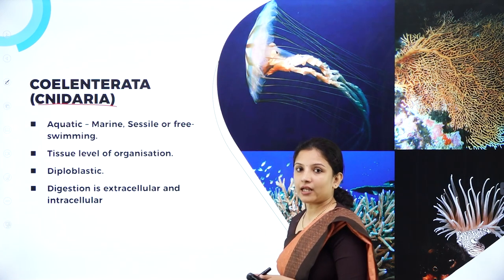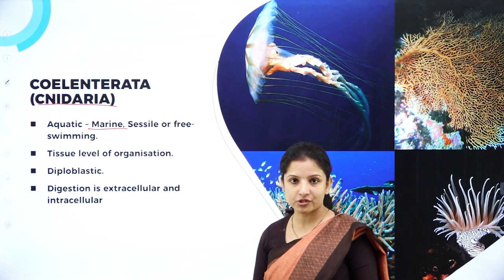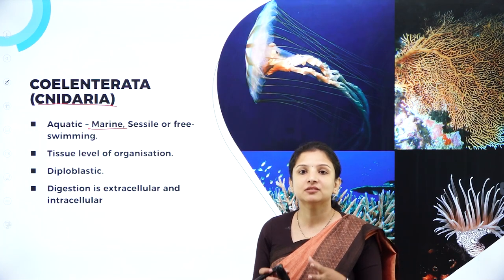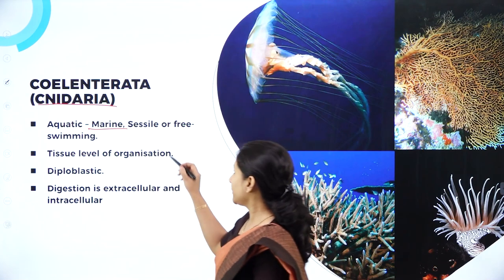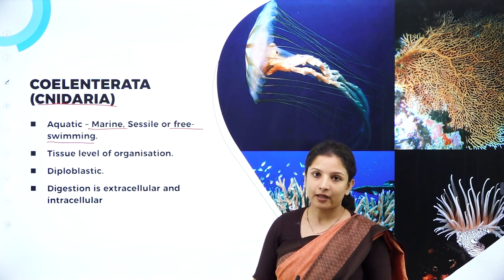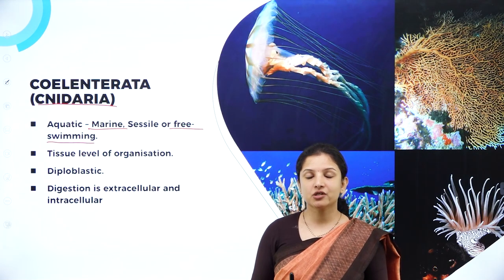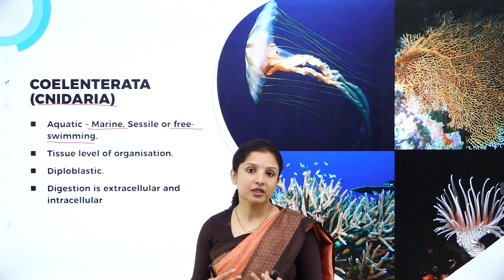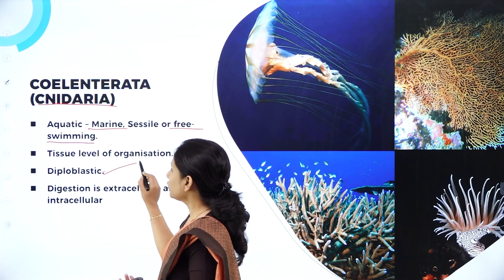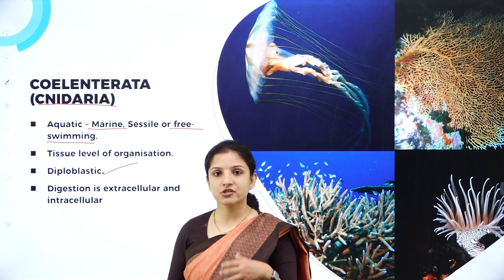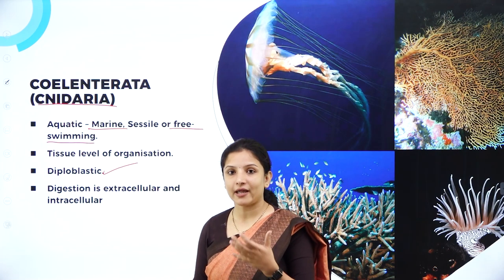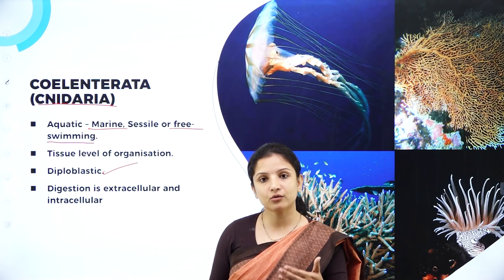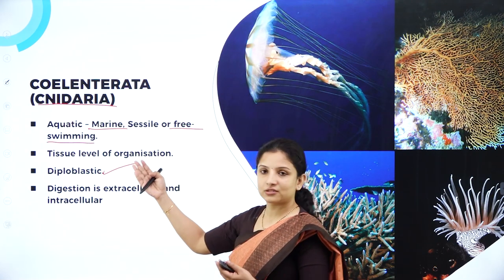Talking about their habitat, they are aquatic — specifically marine, living in oceans and seas. They can be sessile, fixed to a particular substratum on the ocean or sea bed, or free swimming, moving freely in the aquatic habitat. They show tissue level of organization, wherein a group of closely packed cells come together to perform a particular function. Their mode of cell arrangement is diploblastic, with cells arranged in two embryonic layers: an outer ectoderm and an inner endoderm.